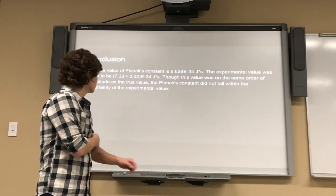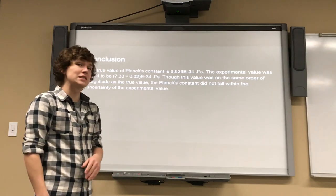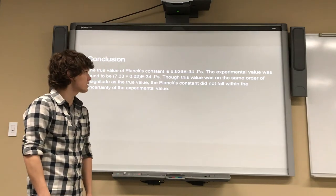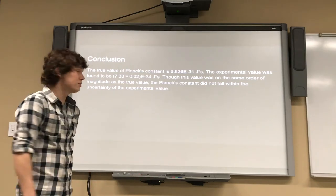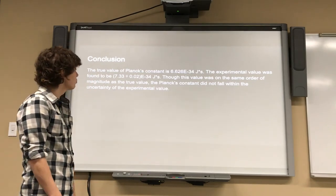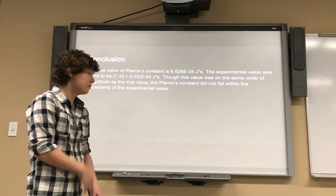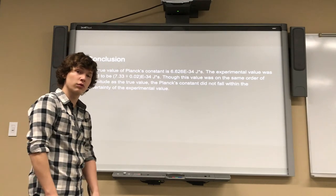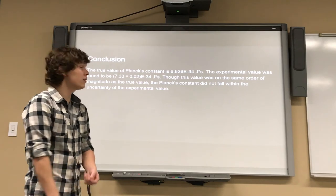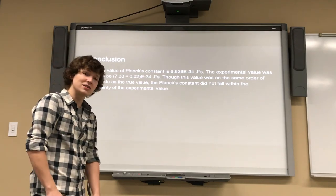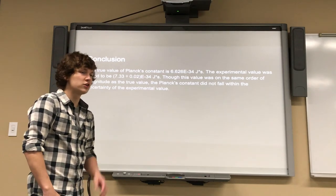In conclusion, the true value of Planck's constant is 6.626 times 10 to the negative 34th joule seconds. The experimental value was found to be 7.33 plus or minus 0.02 times 10 to the negative 34th joule seconds. Though the value was on the same order of magnitude as the true value, the Planck's constant did not fall within the registered value.